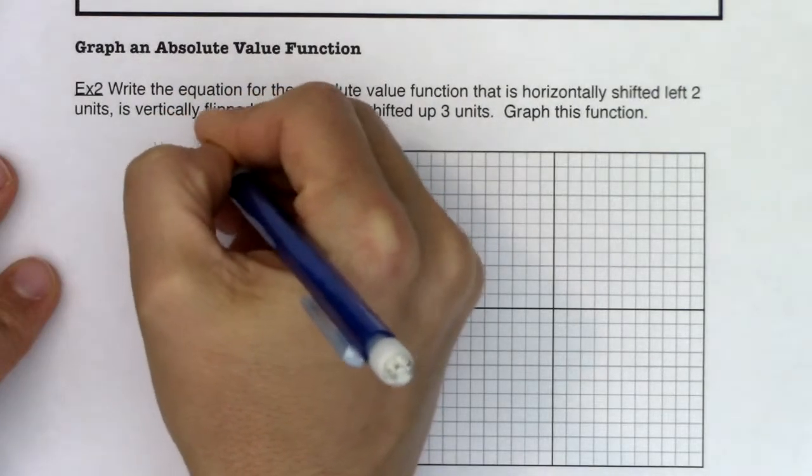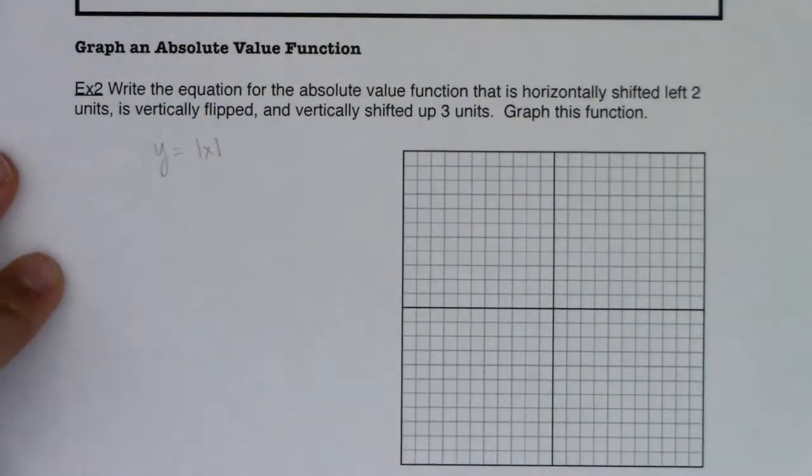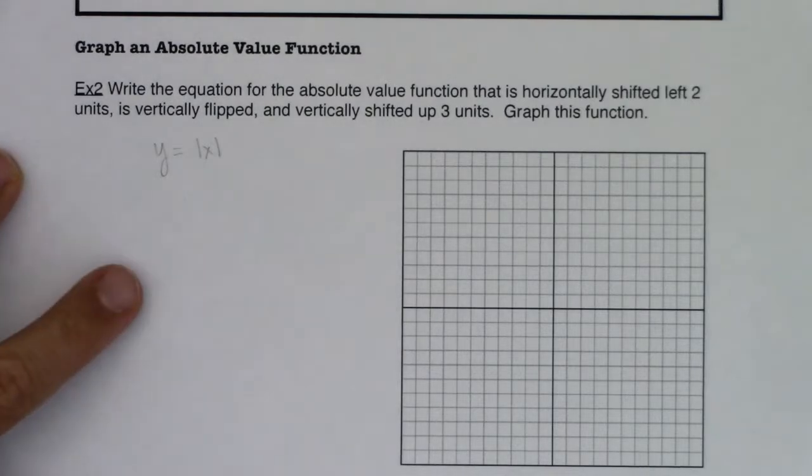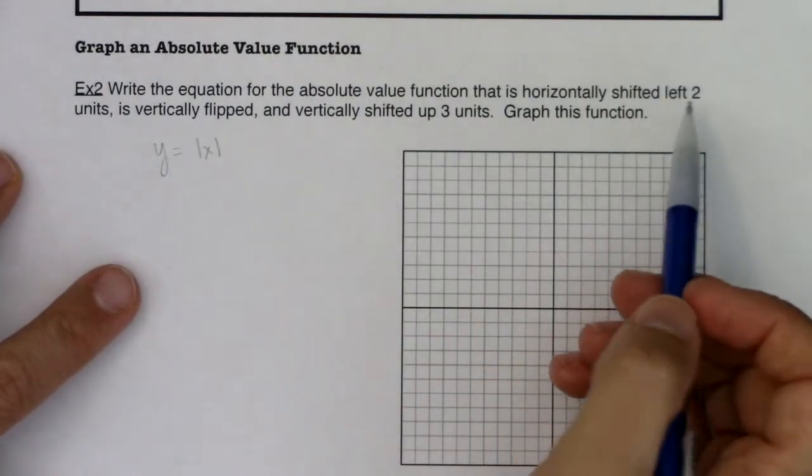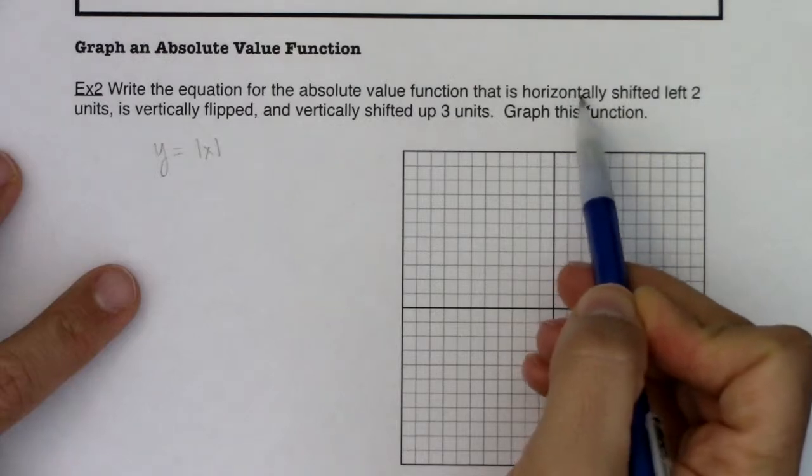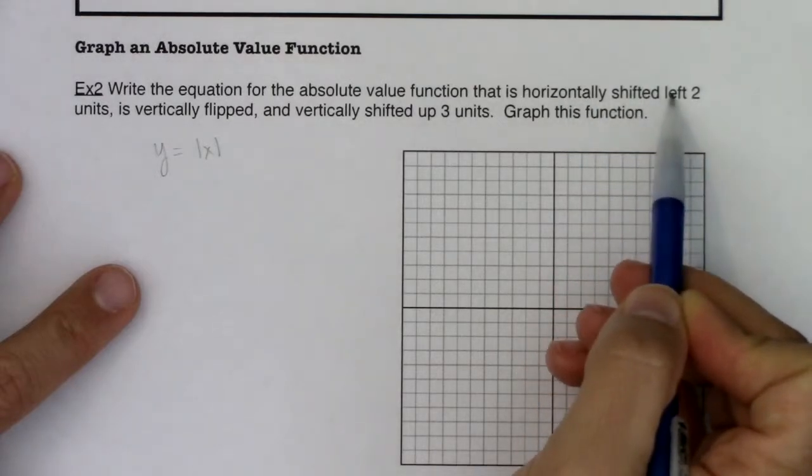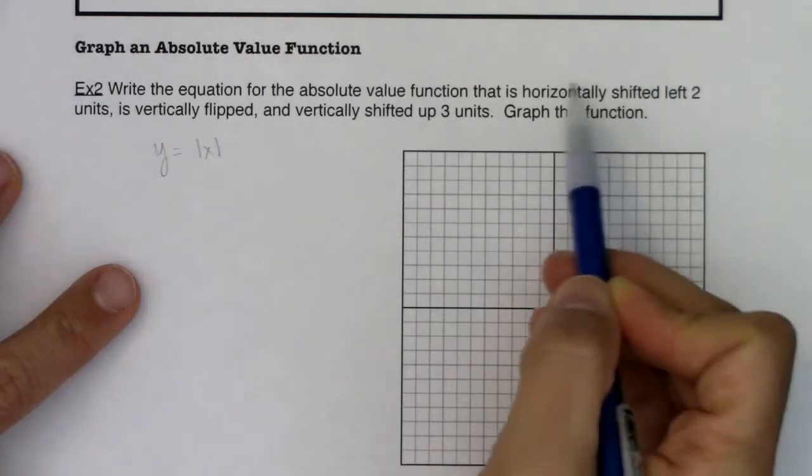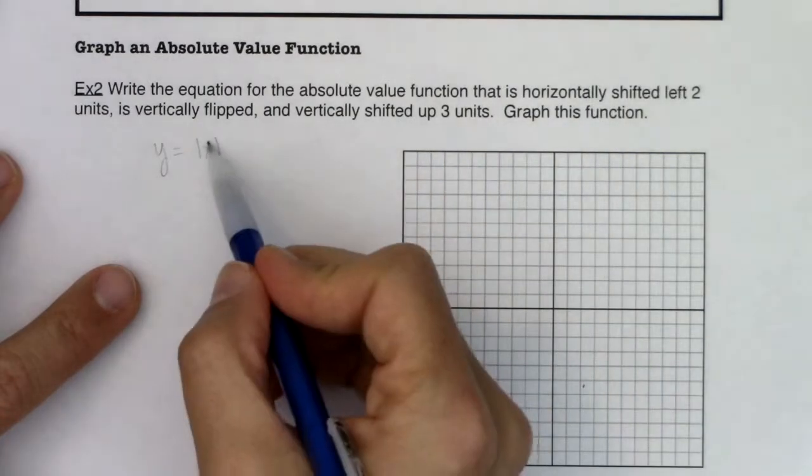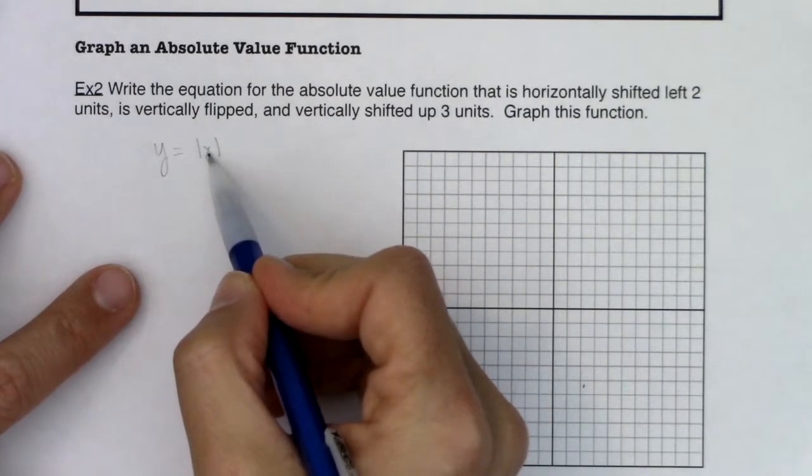So before I get to my official function, I'm going to start with the absolute value. Let me start with my toolkit. And then let's go through these transformations, one transformation at a time. So it says horizontally shift left. All right, when you're shifting left and right, that will happen inside your grouping symbols. And in this case, that means inside the absolute value.